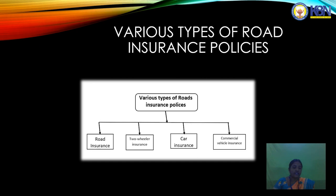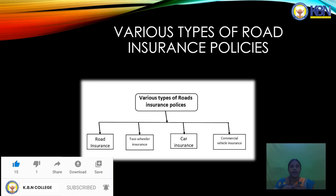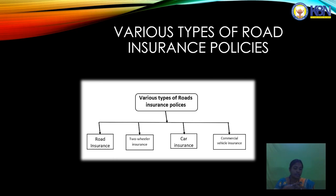Third party with theft and fire accidents covers travel of people and goods from one place to another by roadways — specifically covering certain types of theft and fire accidents, and the types of damage to goods covered. Comprehensive insurance means full insurance coverage for the policy holder for goods as well as people from one place to another by roadways.